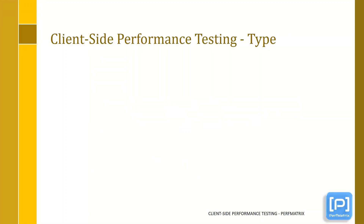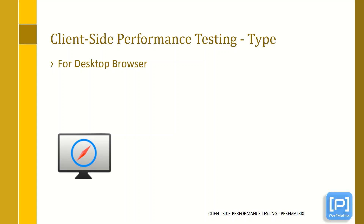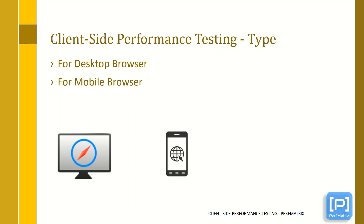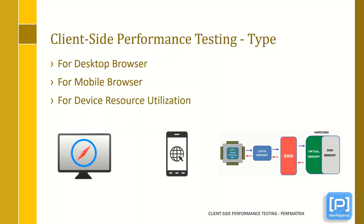Next, let's see what types of tests can be included in client-side performance testing. Basically it has three types: the first is for desktop browser — to test the performance of the website on a desktop browser; the second is for mobile browser — to test the performance on a mobile browser; and the third is related to device resource utilization, to understand the consumption of CPU, memory, network, and localization.